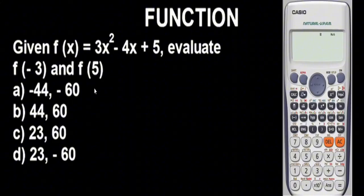Now the next thing you're going to do is solve this problem we have here. Let's look at the question. The question says given f(x) = 3x² - 4x + 5, evaluate f(-3) and f(5).